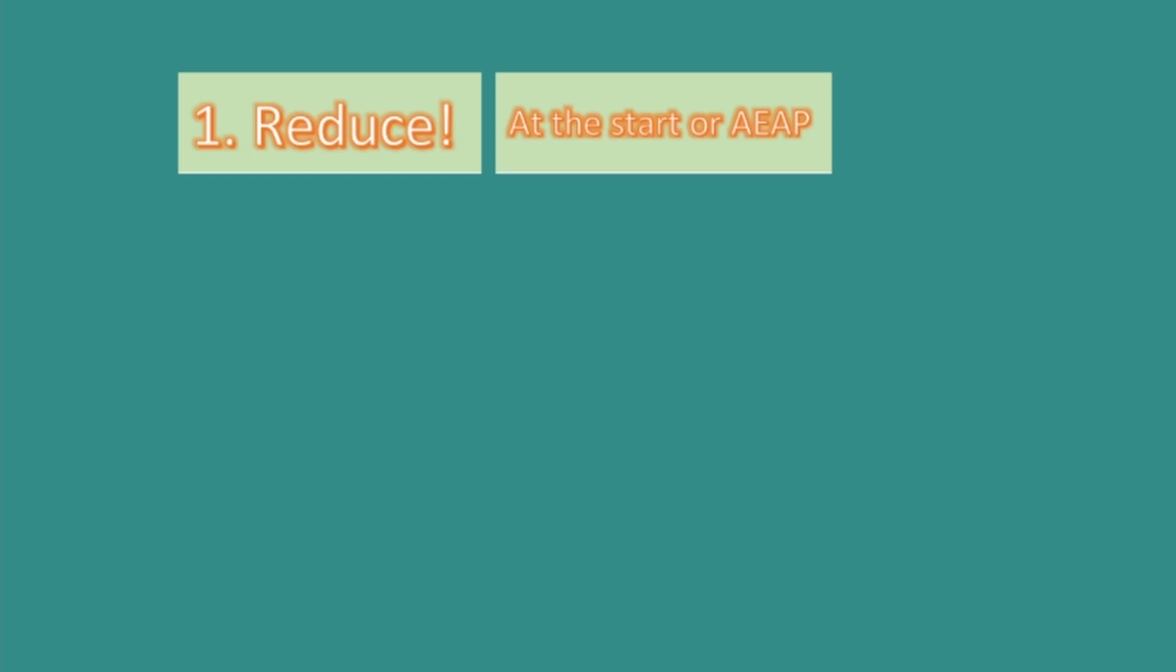So why not reduce at the start if you can? So that's my first key to solving. Number one, reduce at the start of the problem or AEAP, which stands for as early as possible. If your problem can reduce, you'll have to reduce at the end anyway. So why not do it at the start? This keeps the numbers small and helps you solve the simpler problem.